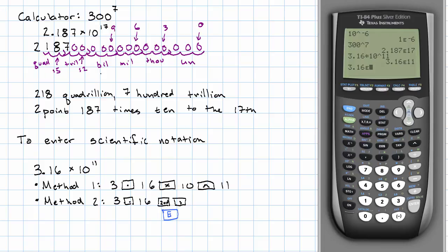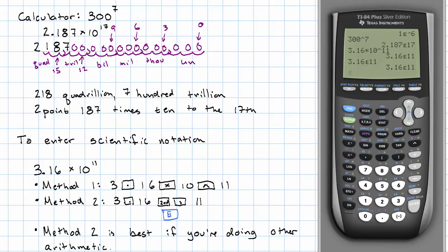And then I just type in the exponent, 11. Again, same result. Which one should you use? Whichever one occurs to you at the moment. If you're going to be doing other arithmetic, method two is easier. Why? Because the calculator then interprets that as just one number. If you use method one, make sure to put your number in parentheses.